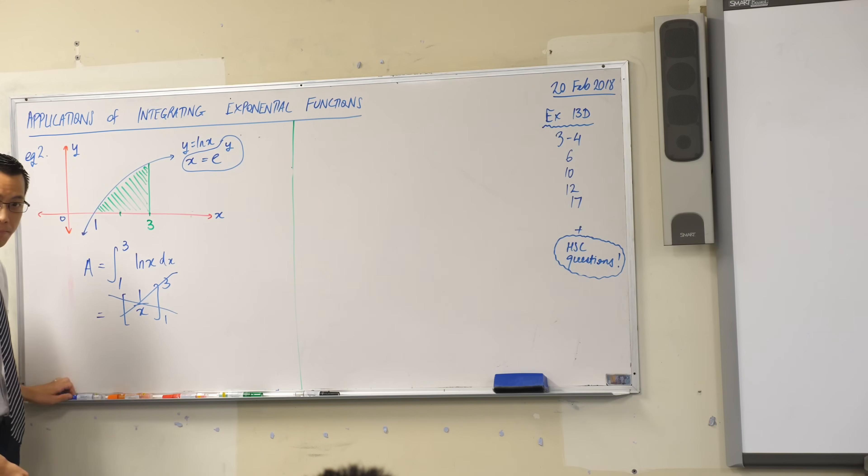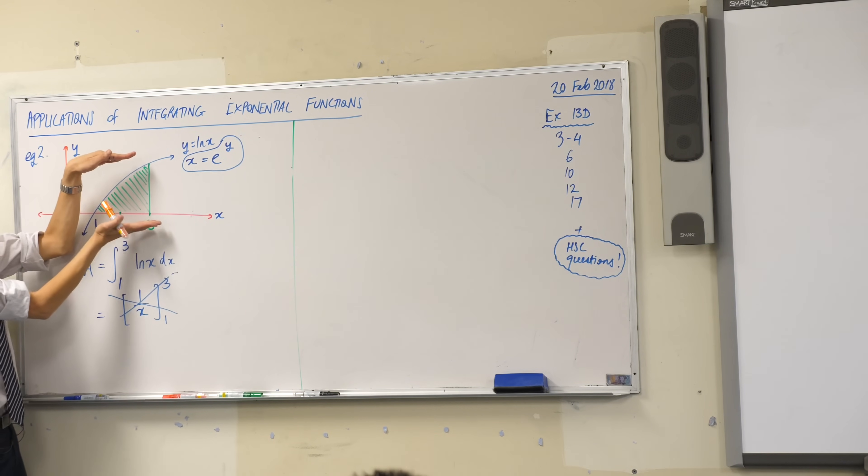Where is it on the board? Yeah, when you integrate with respect to x you bind it, you make an area with the x-axis, does that make sense? If you integrate with respect to y you make an area with the y-axis, does that make sense?